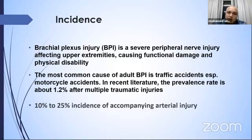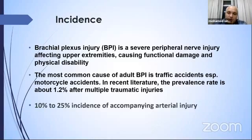Brachial plexus injury in adults is a severe peripheral nerve injury affecting the upper extremity, causing functional damage and physical disability. The most common cause is traffic accident, especially motorcycle accident. The prevalence rate of brachial plexus injury in motorcycle patients is about 1.2 percent, with an incidence of up to 25 percent of accompanying arterial injury.